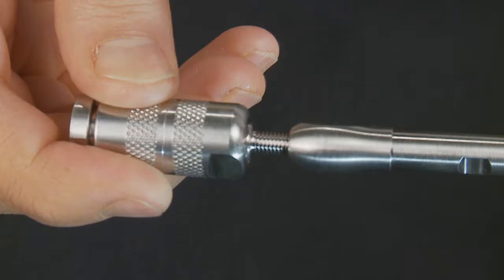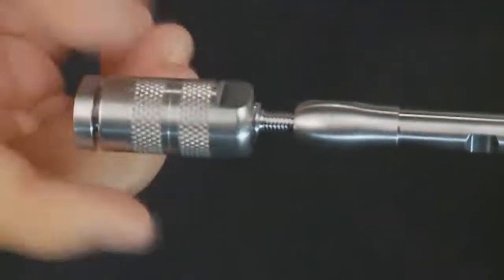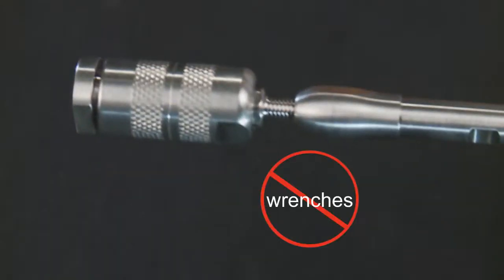In a clockwise direction, hand tighten the complete holder assembly onto the column. Do not use wrenches when connecting the Security Guard assembly to the column as it may cause assembly or column damage.